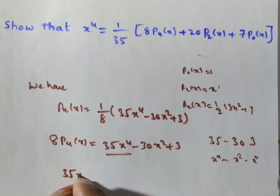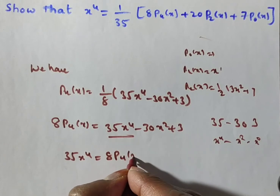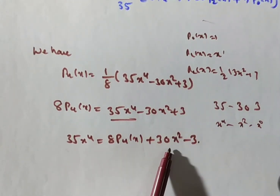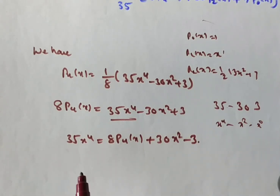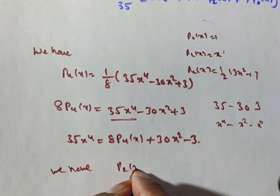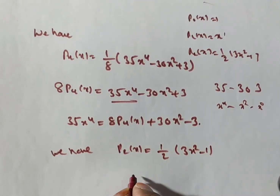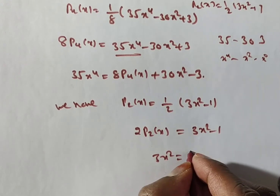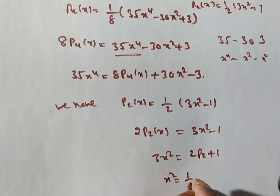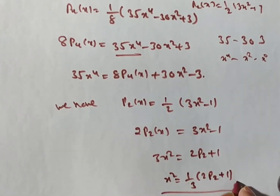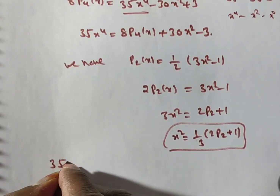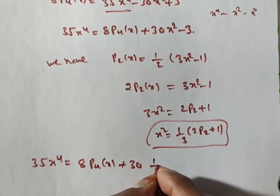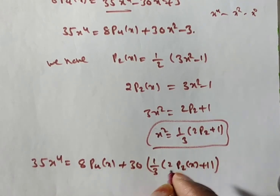From this I want only 35x⁴, so: 35x⁴ = 8·P₄(x) + 30x² - 3. Next, x² is present, so P₂ is required. We have P₂(x) = 1/2·(3x² - 1), so 2·P₂(x) = 3x² - 1, giving 3x² = 2·P₂(x) + 1, hence x² = 1/3·(2·P₂(x) + 1). Substituting this x² value: 35x⁴ = 8·P₄(x) + 30·[1/3·(2·P₂(x) + 1)] - 3.